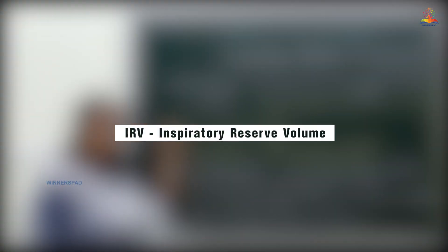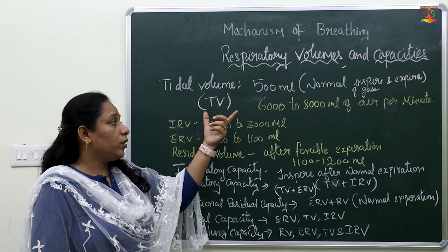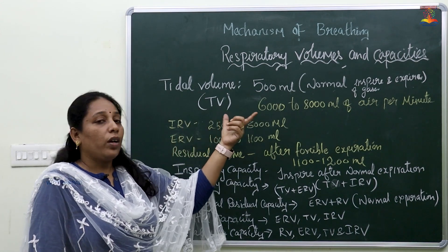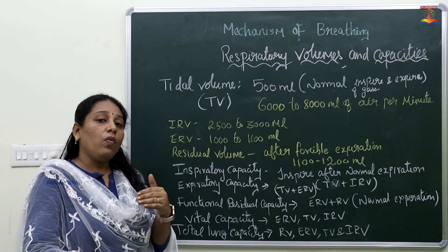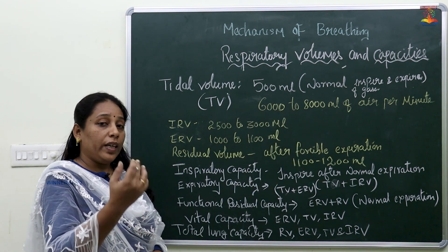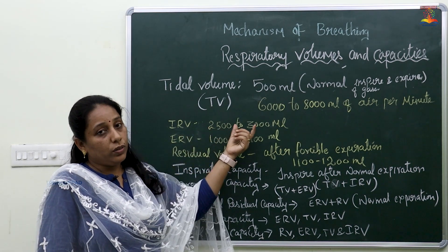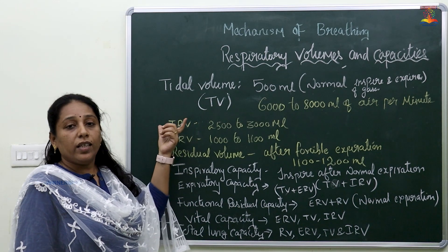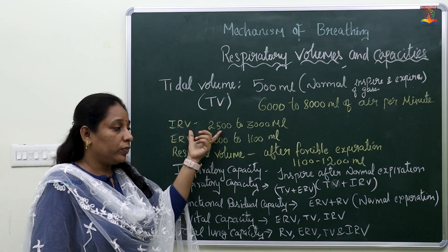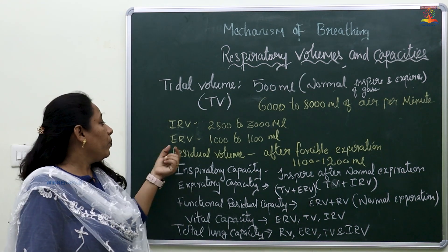Next is IRV — Inspiratory Reserve Volume. The normal amount of air is around 6,000 to 8,000 ml, plus an additional volume of air which is inhaled, which may be around 2,500 to 3,000 ml. That additional volume is called the Inspiratory Reserve Volume.